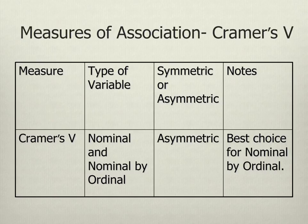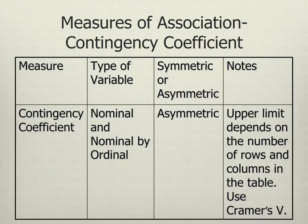Cramer's V is a great measure of association if you have nominal by nominal or nominal by ordinal data. Again, because it's for nominal variables, it's asymmetric, meaning it won't give you the direction. If you have nominal by ordinal data, I would consider Cramer's V your best choice. The contingency coefficient is another measure of association that can be used with nominal and ordinal data. However, the upper limit on this one depends on the number of columns and rows in the table, which can be confusing for novices. Therefore, I'd suggest using Cramer's V instead.